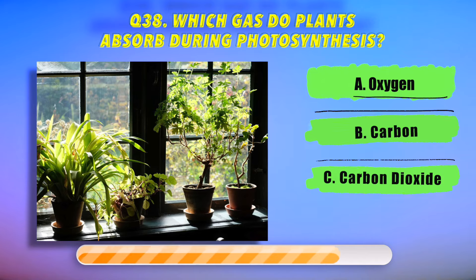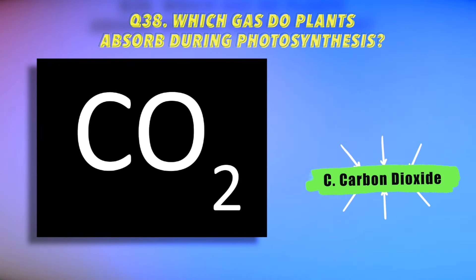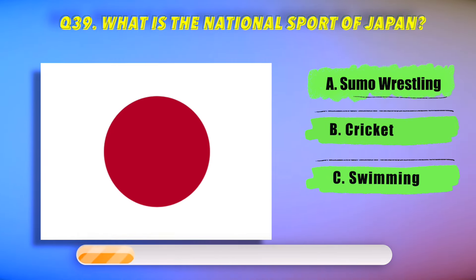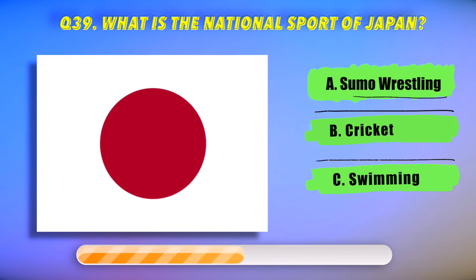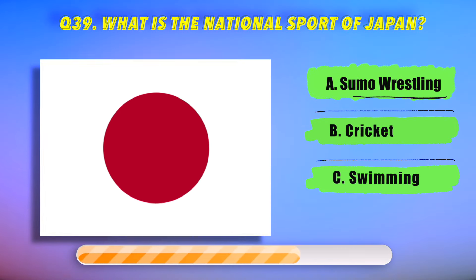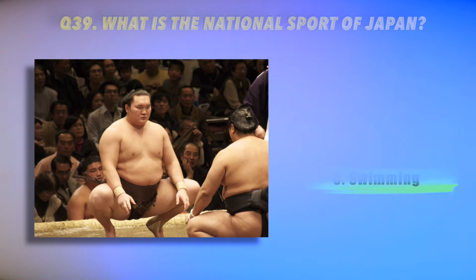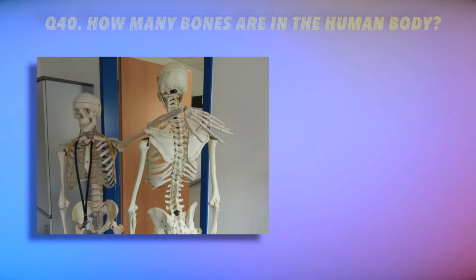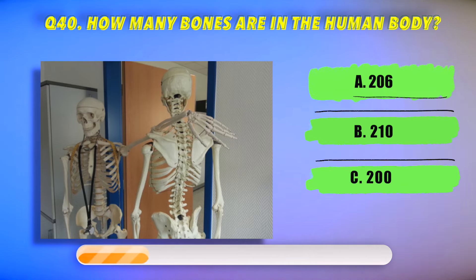Which gas do plants absorb during photosynthesis? What is the national sport of Japan? Question 40: How many bones are in the human body?